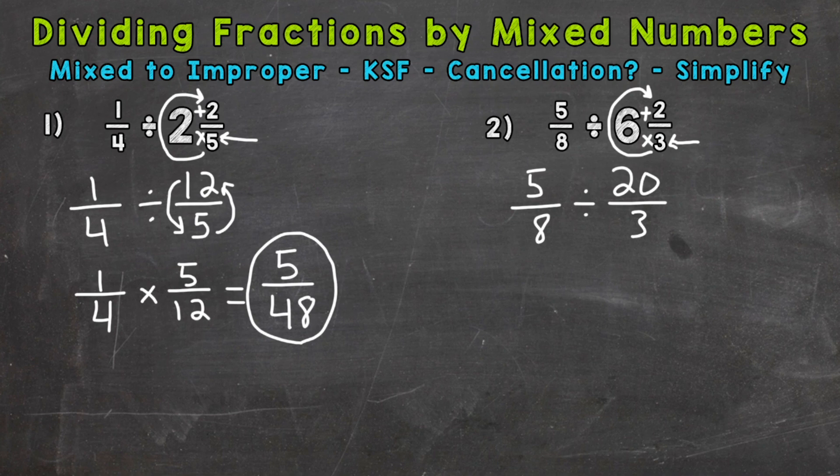So keep, switch, flip. Always keep the first fraction, switch to multiplication, and then flip. So we have three over twenty now. Now we're able to solve and multiply straight across.